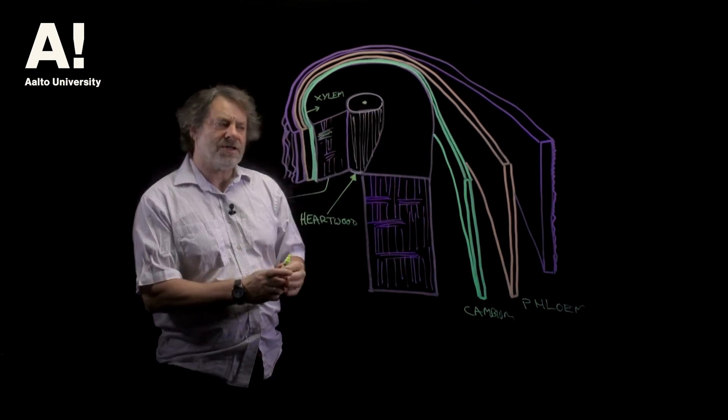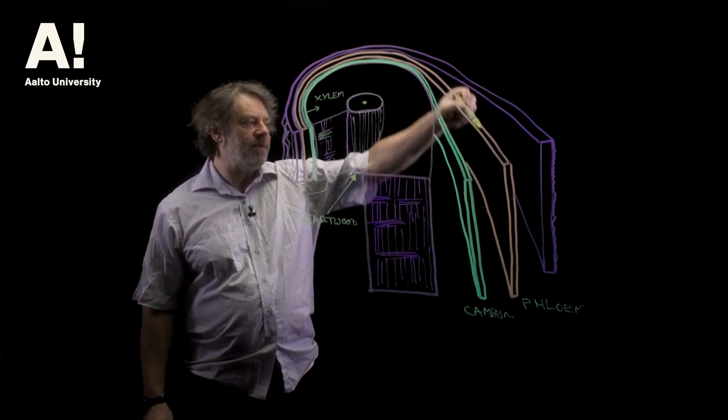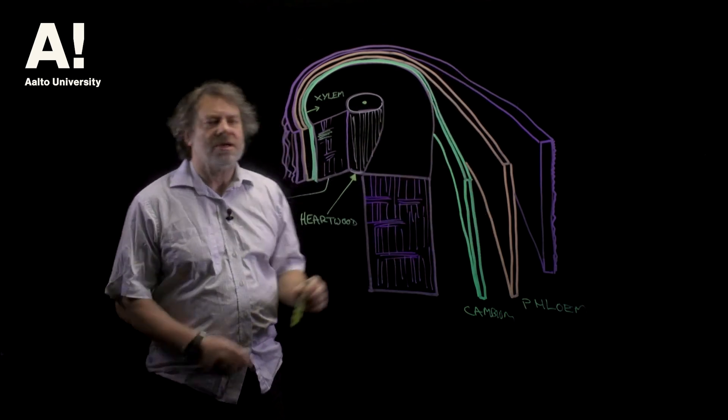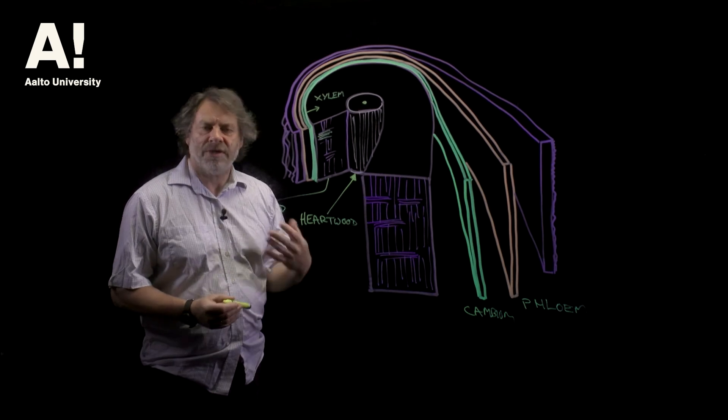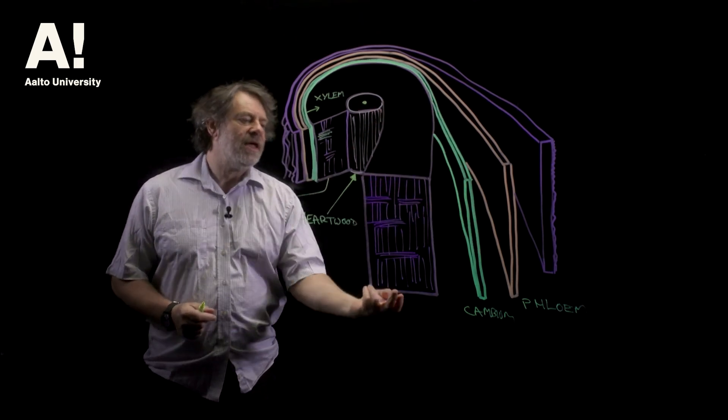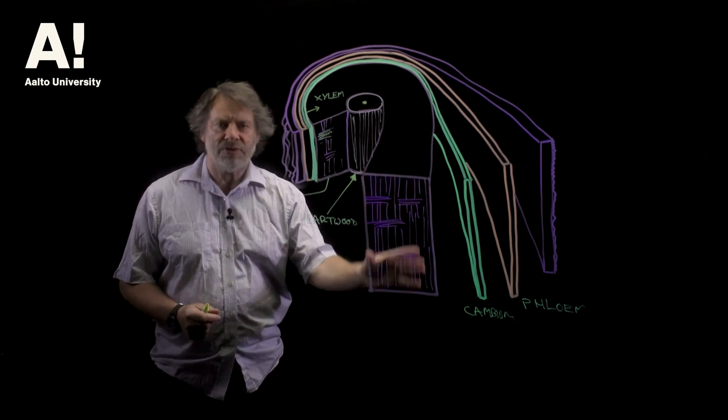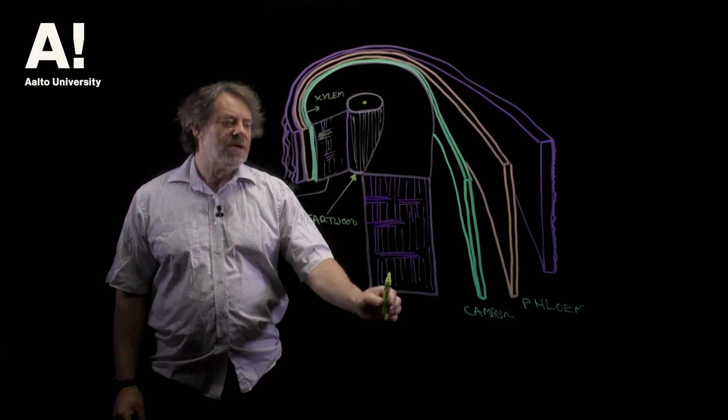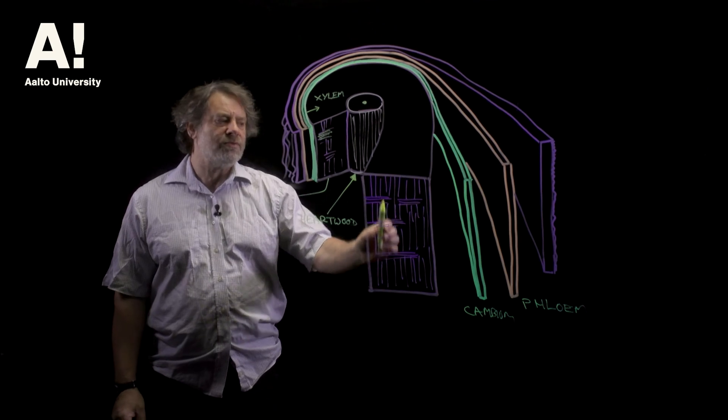So this is a structure of vascular plants. The phloem conducts the products of photosynthesis downwards from the canopy to the roots. And the xylem tissue, the sapwood part of the xylem tissue, conducts water up from the roots to the canopy.